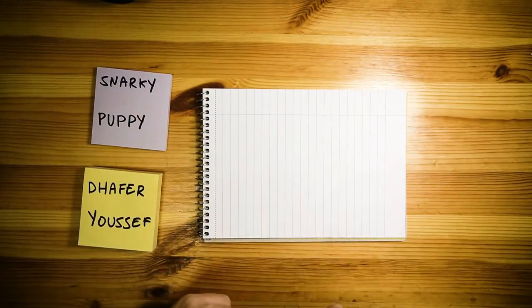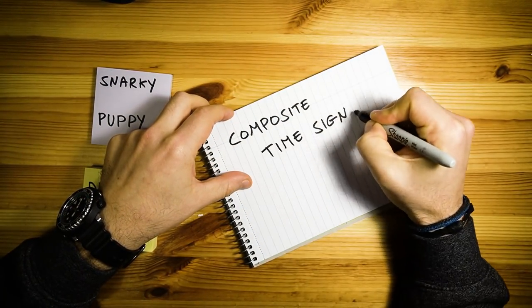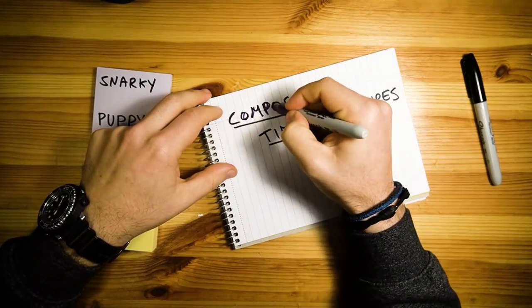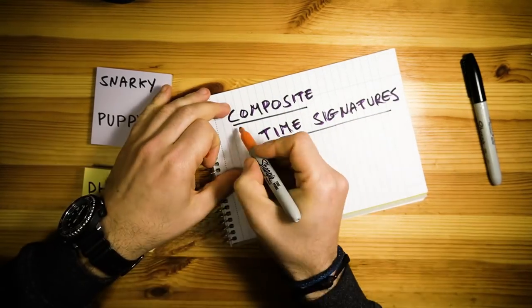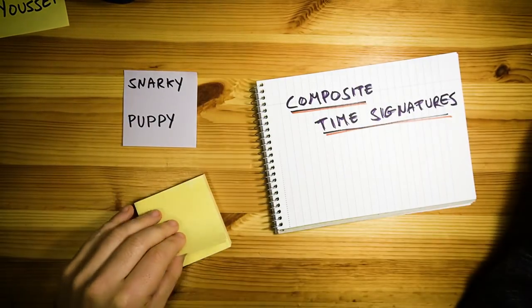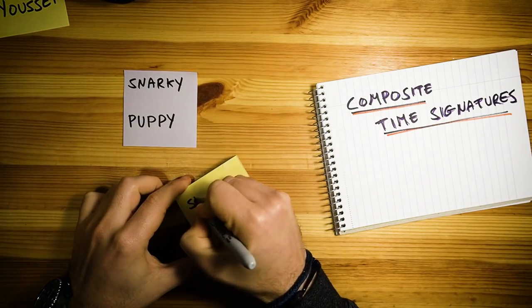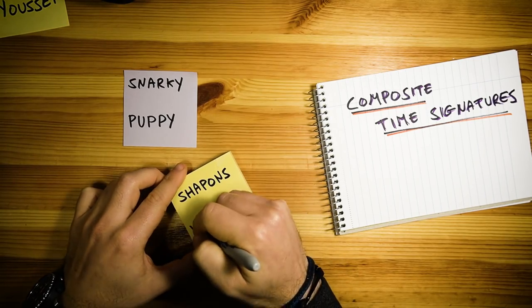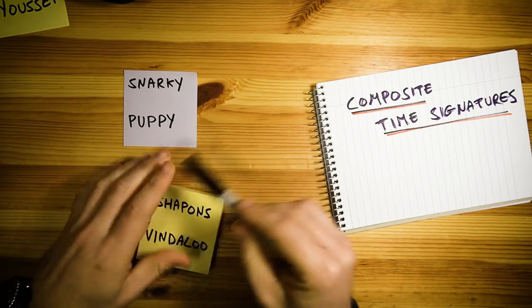Both examples use a composite time signature, and both use very interesting methods to smooth out these complex rhythmic structures. Starting off with the song Shapons Vindaloo by Snarky Puppy featuring Veysen Vassen. I'm sure I butchered at least 60% of that sentence.